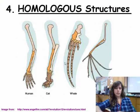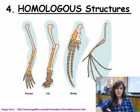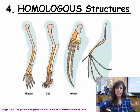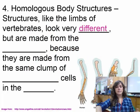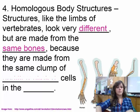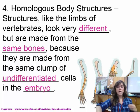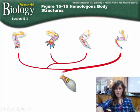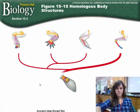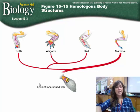Homologous structures: we have all these different bones of different organisms that are similar and found in similar spots. Homologous body structures, like limbs in vertebrates, look different but are made from the same bones because they develop from the same clump of undifferentiated cells in the embryo. You can see these structures across organisms - the ancient lobefin fish, turtle, alligator, bird, and mammal all share these homologous bones even though they look different.